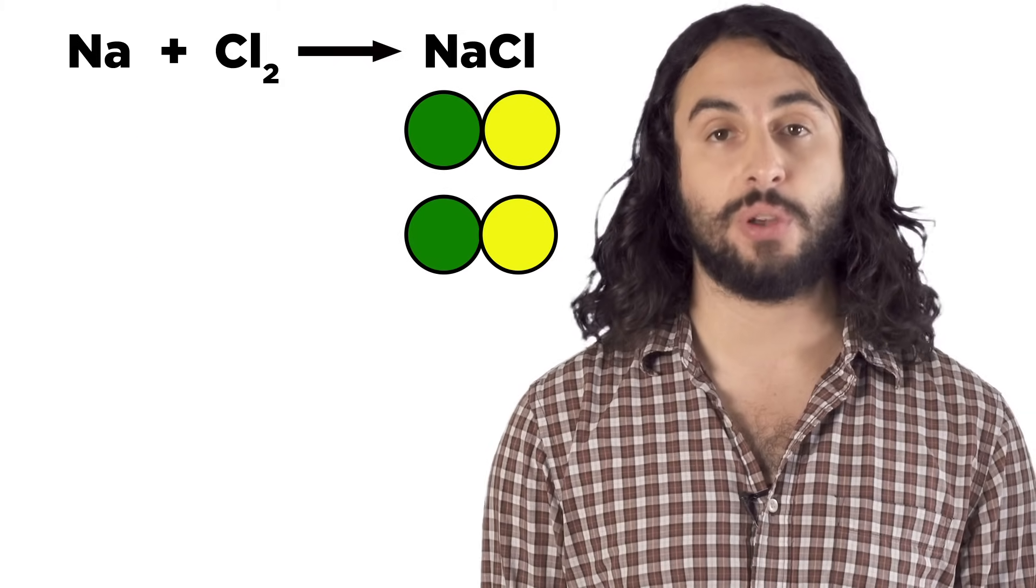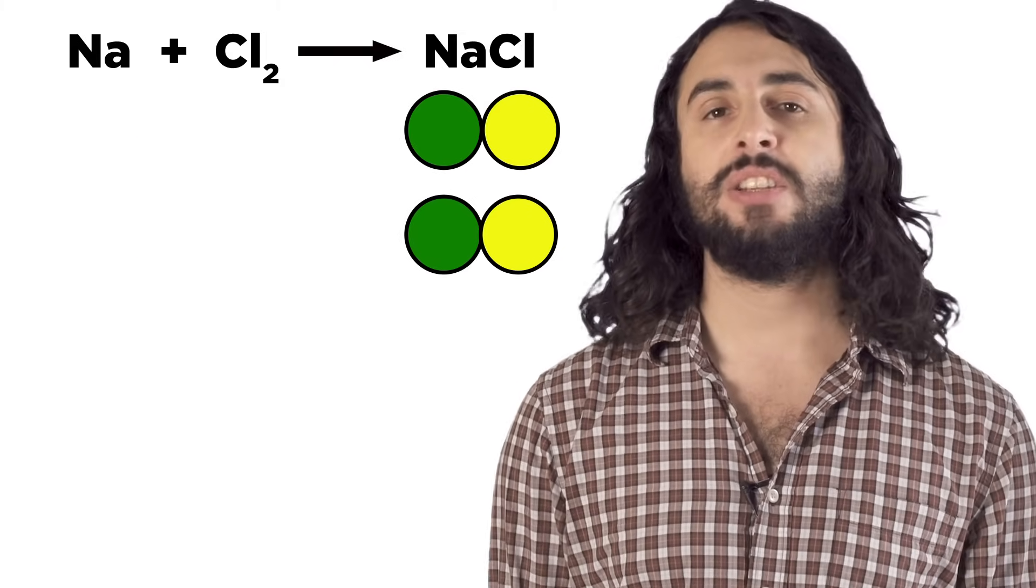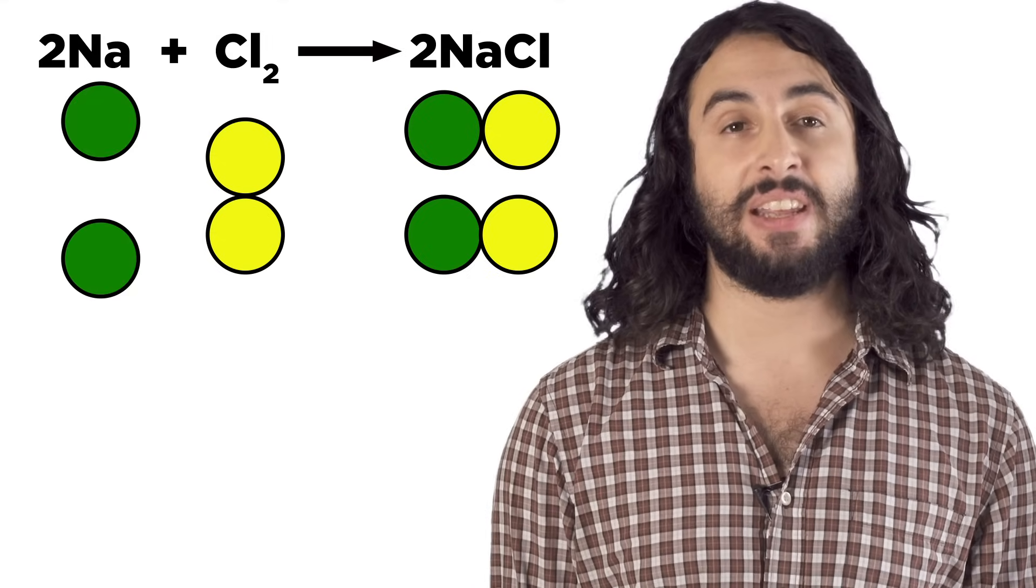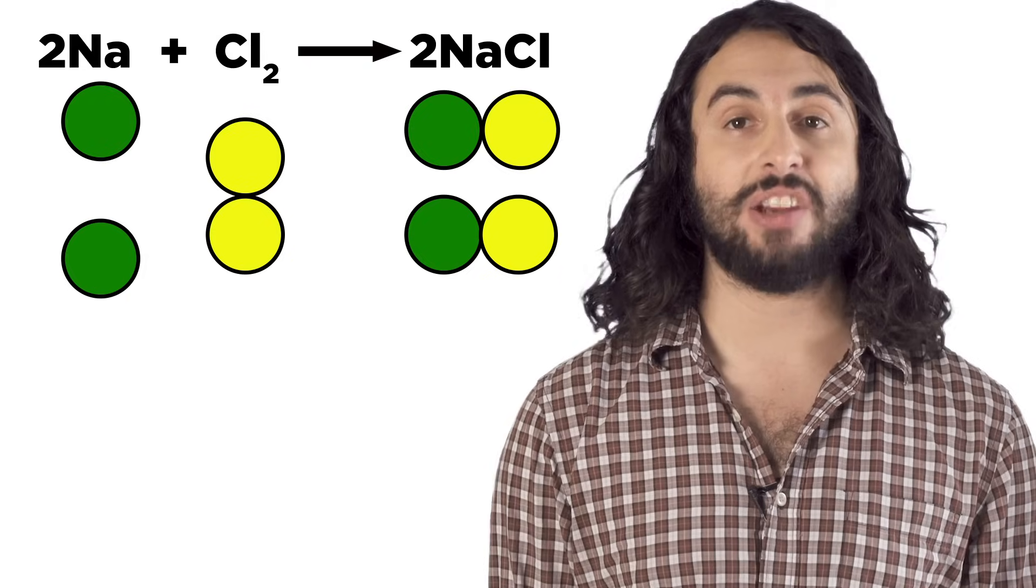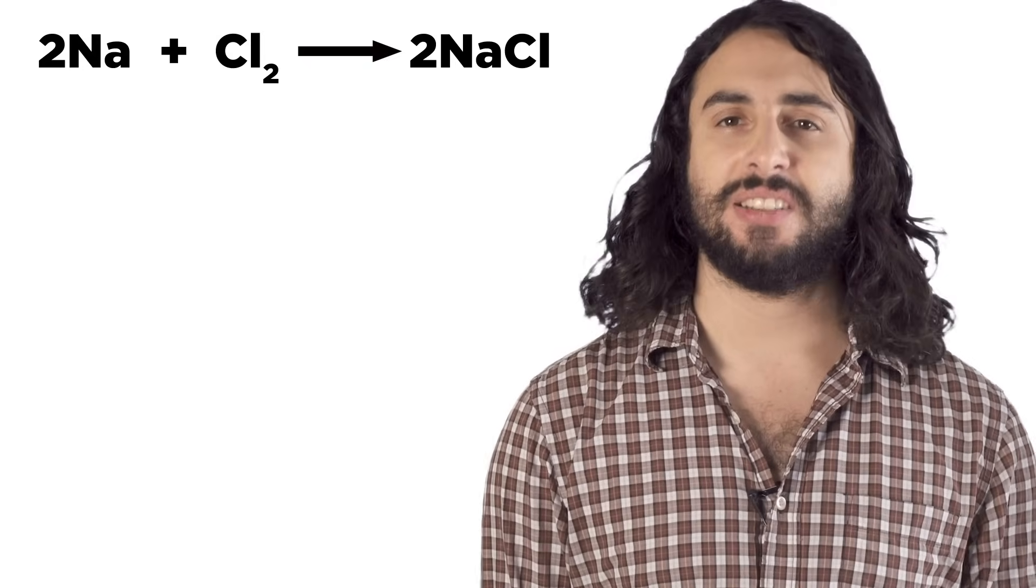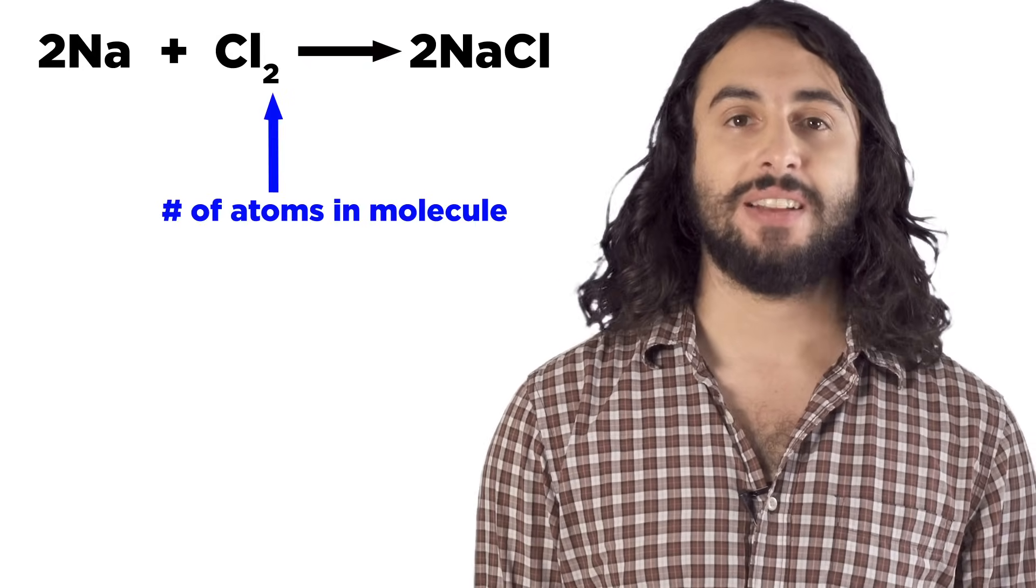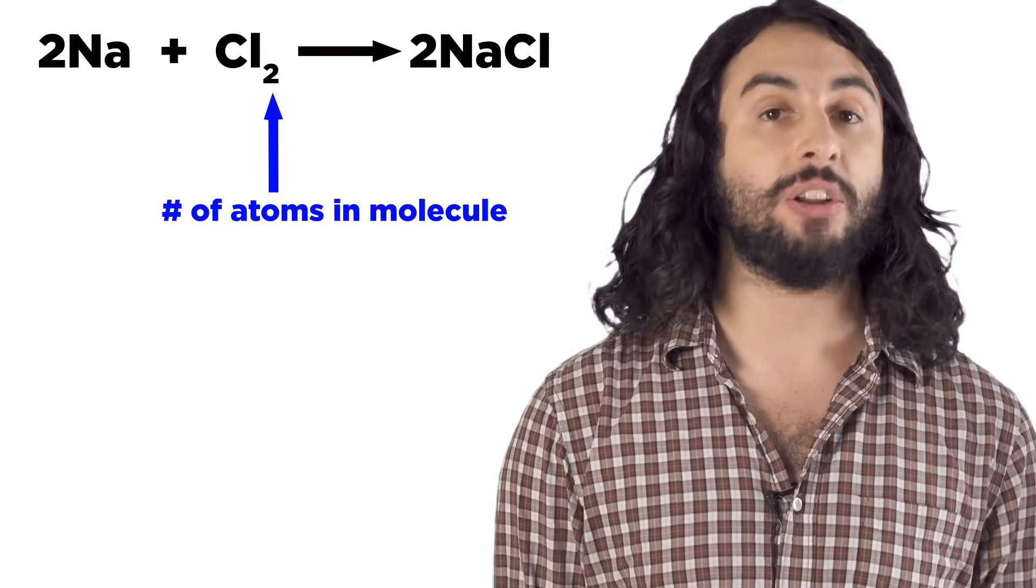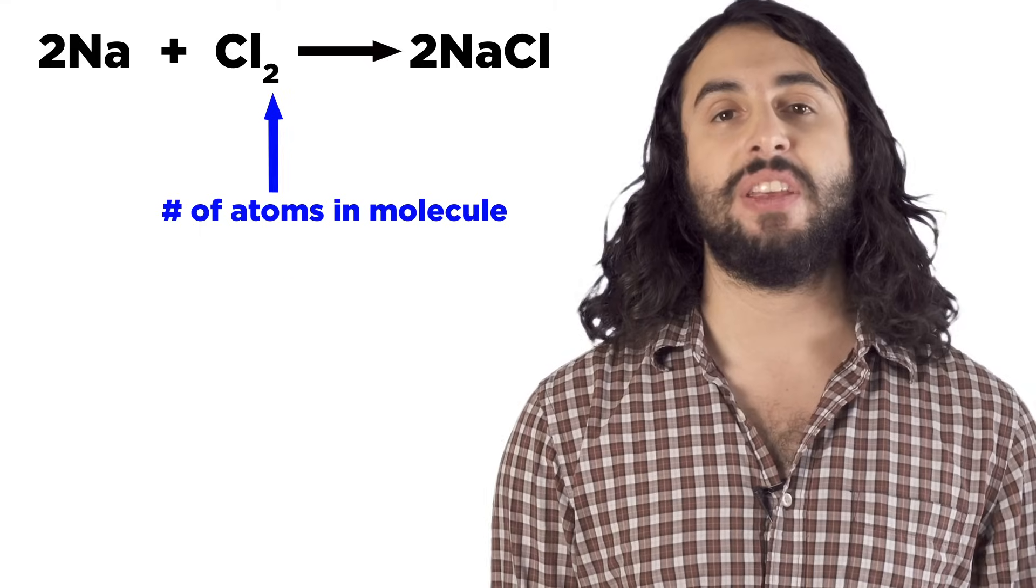We need to include coefficients before each substance to indicate how many of each we need to make the equation balanced. Let's make the distinction that these subscripts tell us how many atoms of a given element are in one molecule, whereas these coefficients tell us how many of that molecule there are in the reaction.